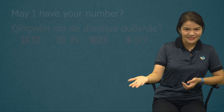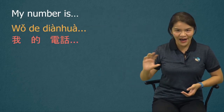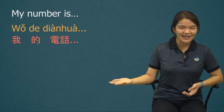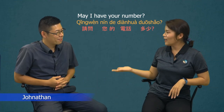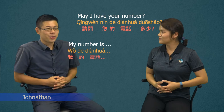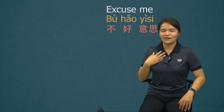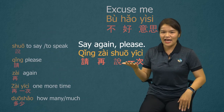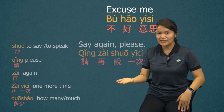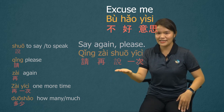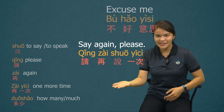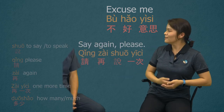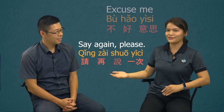And how to answer that? 我的电话, then the number. If it's too fast and you didn't get it, say: 不好意思，请再说一次. 不好意思 means 'excuse me', and 请再说一次 means 'say again, please'. 不好意思，请再说一次.